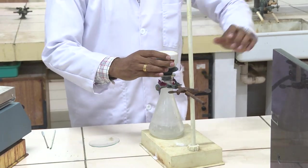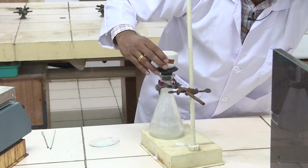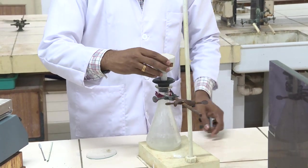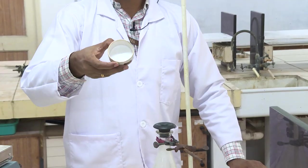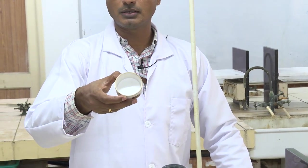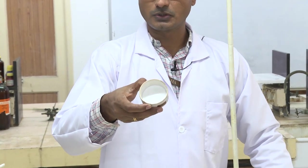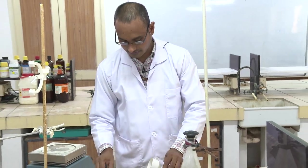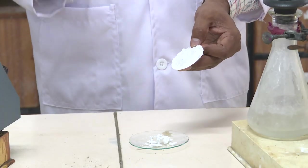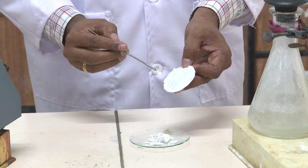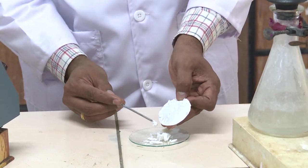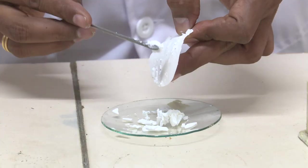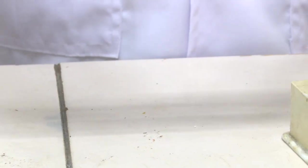After complete filtration, now I am going to switch off this vacuum pump. Now you are able to see the material, a white colored sol material is there. So now I am going to transfer this material into a watch glass or petri dish. Now I am going to scrape the entire material into this petri dish. Now you can see the material.